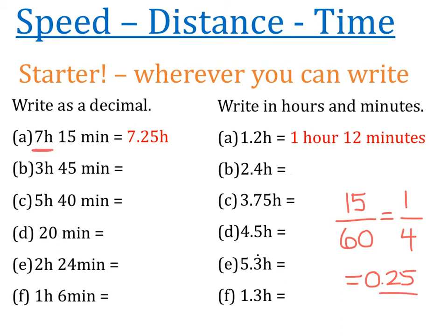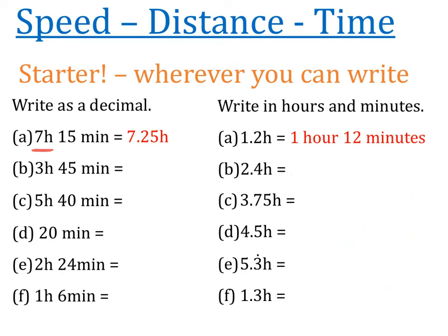The 7 came from the 7 hours. I'd like you to make an attempt, wherever you can write this down, to do all of the first column - write all of those hours and minutes as a decimal amount of hours. For instance, question B is 3 hours and 45 minutes, so we're looking for 3 point something. Go ahead and have a go. You can pause the video now if you'd like.